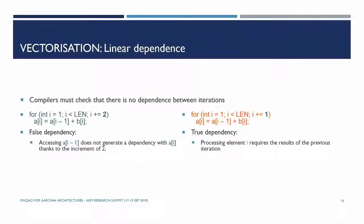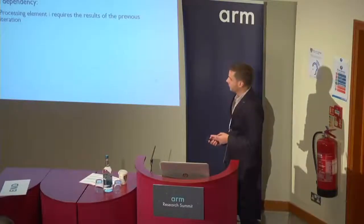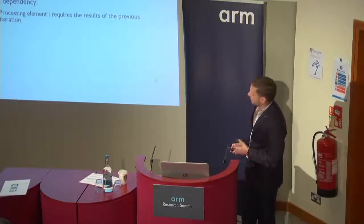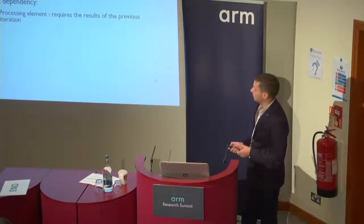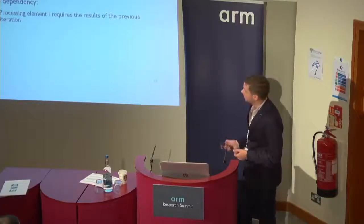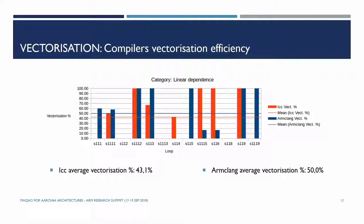The first category in the test suite is linear dependence. It checks that the compiler does not get confused by elements in the loop. For example, here we have a false dependency: we access element i-1 in an array, but because we have an increment of 2 it doesn't generate a true dependency. In blue is the ARMclang vectorization percentage and in red the ICC vectorization percentage. On average, ARMclang is slightly better than Intel, which is pretty good.